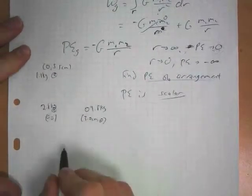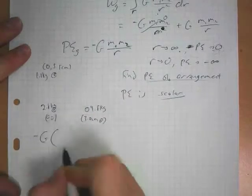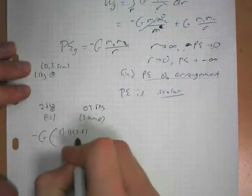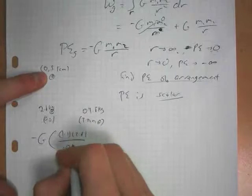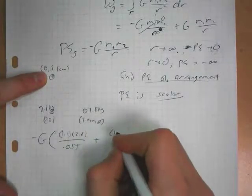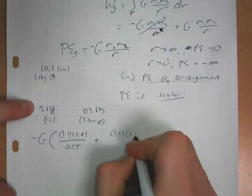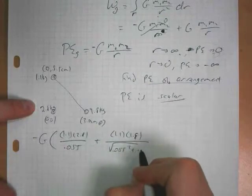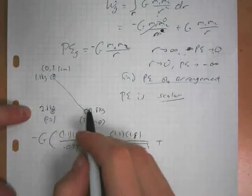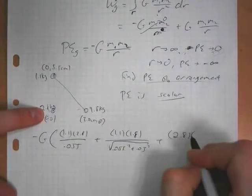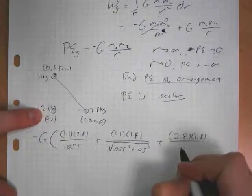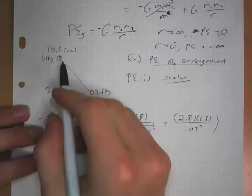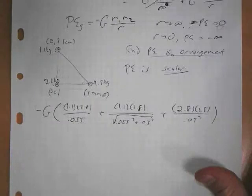So everything has a minus G attached to it. And then we just do each pair of masses. 1.1 times 2.8, over 5.5 centimeters, .055, plus 1.1 times 1.8, over the distance between these two would be the square root of .055 squared, plus .03 squared, plus then the potential energy of this pair is 2.8 times 1.8, over .03 squared. And that would be how we figure out the potential energy of this little arrangement of particles. You can just add up all the potential energies.